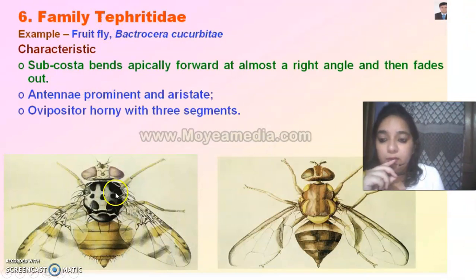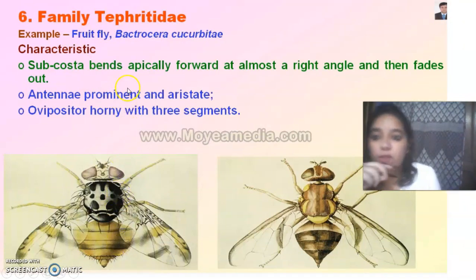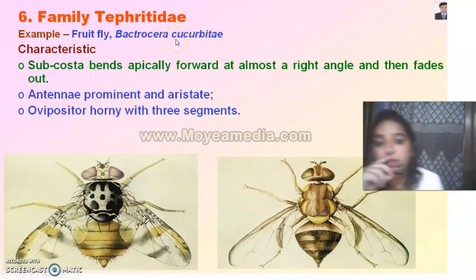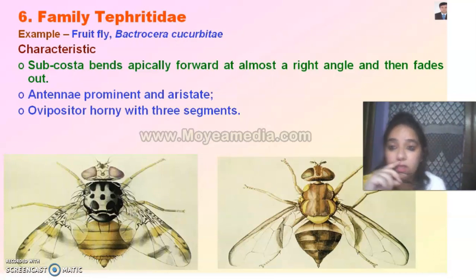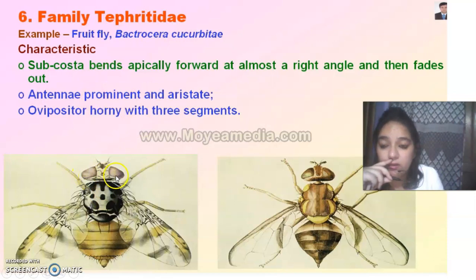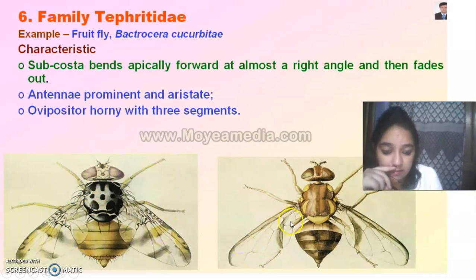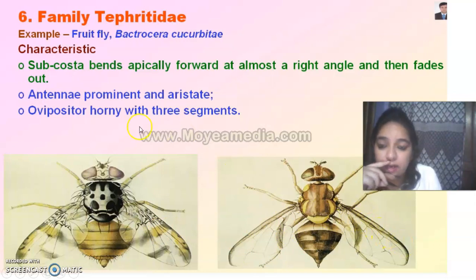In Syrphidae we also have fruit flies, also known by the family Drosophilidae. You normally see their maggots because their life cycle revolves around fruit. The antenna is aristate, compound eyes are prominent, and wings are membranous with visible veins — the first vein is dark and then it fades. The ovipositor is horny and shows three-segmented spines.